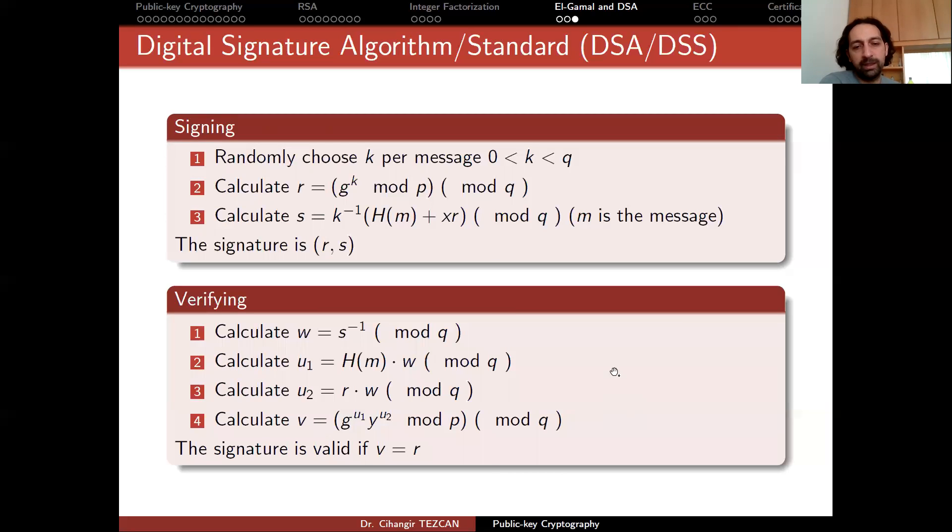So it is as simple as that. You might think about why it works. It is not that hard. Just think about what G to the U1 and Y to the U2 are by looking at these definitions. And you will realize that it is almost identical to what we are doing here. I will leave it as an exercise to see why this works. But as you can guess, only the person who has the secret information X can sign a message and everybody else knowing the public parameters can verify if the signature is correct or not.